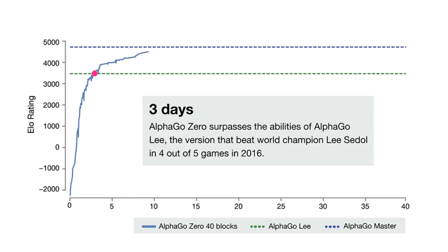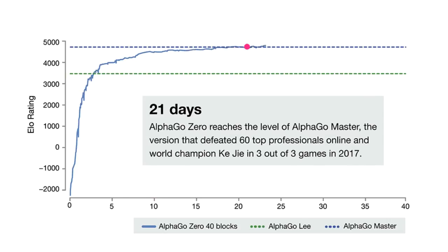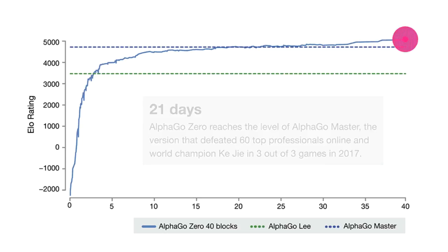After 21 days, it reaches the level of AlphaGo Master that defeated Go Masters including the reigning world champion Ke Jie in May 2017. And after 40 days, it surpassed all versions of AlphaGo to become the best Go player of all time. A very impressive feat indeed.